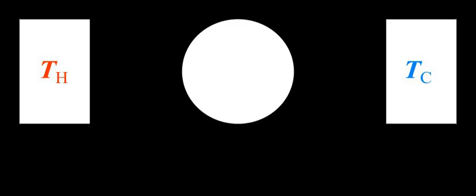The zeroth law of thermodynamics states that if two thermodynamic systems each are in thermal equilibrium with a third one, then they are in thermal equilibrium with each other. Accordingly, thermal equilibrium between systems is a transitive relation. Two systems are said to be in the relation of thermal equilibrium if they are linked by a wall permeable only to heat and they do not change over time.